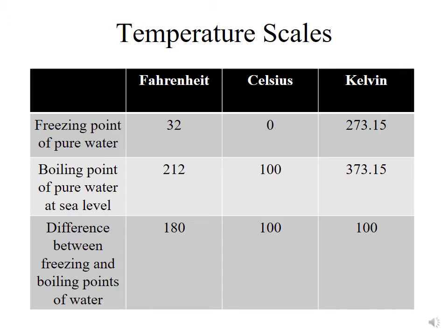If we look at our temperature scales, you can see that the freezing point of pure water on the Fahrenheit scale is 32. The boiling point of pure water is 212. And the difference between freezing and boiling points on the Fahrenheit scale is 180. On the Celsius scale, the difference between those points is 100, as is on Kelvin. So you can see that a 10 degree change in degrees Celsius will be an 18 degree change in degrees Fahrenheit. And that's pretty useful when you want to do a conversion between Celsius and Fahrenheit in your head.